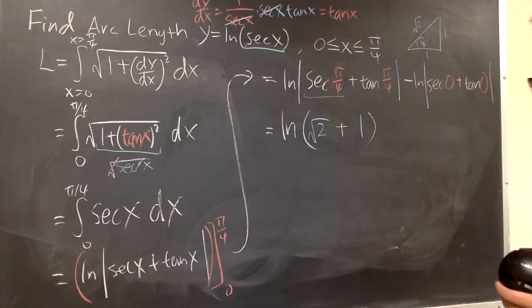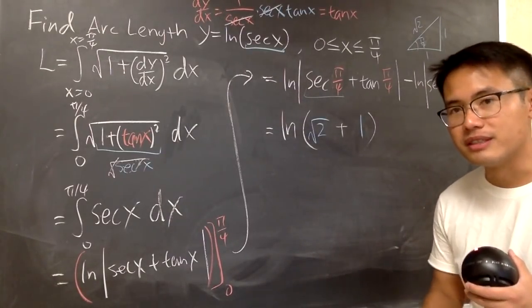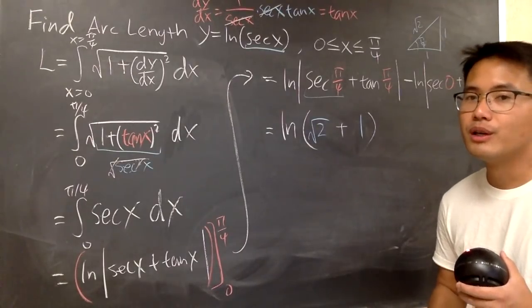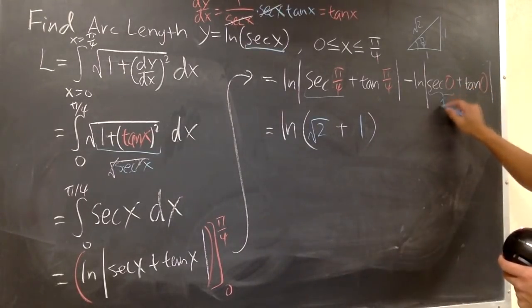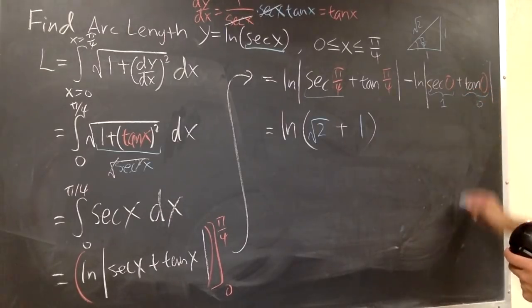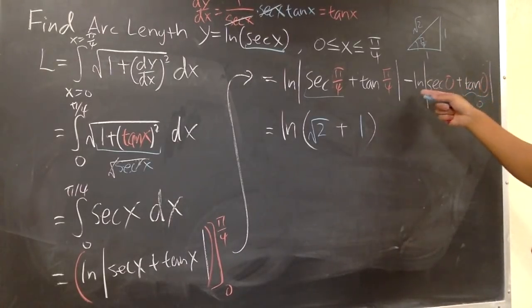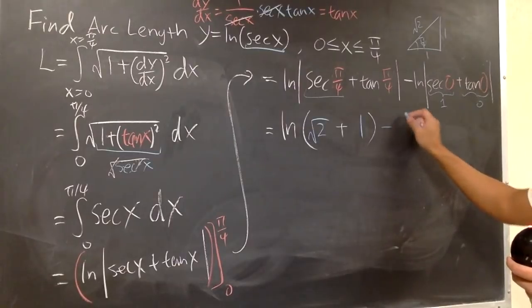Well, what's sec(0)? Sec(0) is the same as 1 over cos(0). Cos(0) is 1. So sec(0) is just 1 over 1. This right here is 1. And tan(0) is 0. 1 plus 0 is 1, ln(1) is 0, so it's pretty much minus 0.